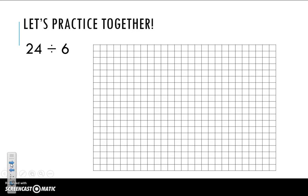Let's try one together. 24 divided by 6. Remember that we're trying to figure out how many equal groups of 6 there are in 24. We're going to start by counting up to 6 using our grid. 1, 2, 3, 4, 5, 6.